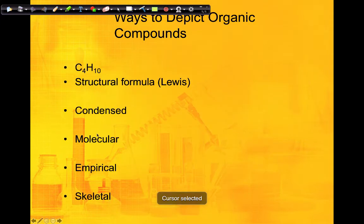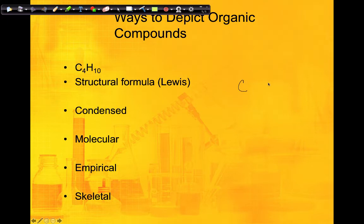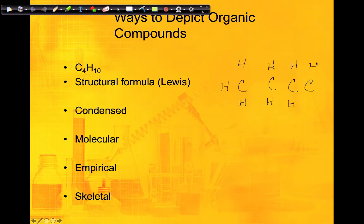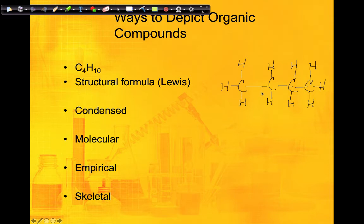There are different ways to show organic compounds. The structural formula — also called the Lewis structure — is the one you're most familiar with. For example, C₄H₁₀ has carbon as the central atom, so we make a chain and draw the hydrogens around it. Each carbon makes four bonds, and when we connect the chain together and make our single bonds, we get the full structural formula.